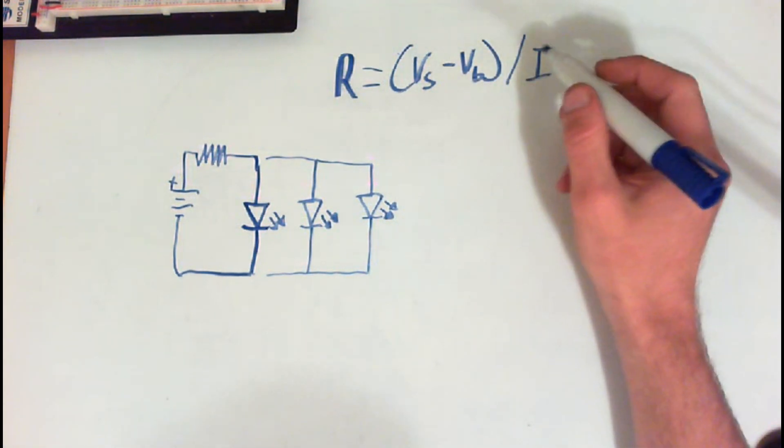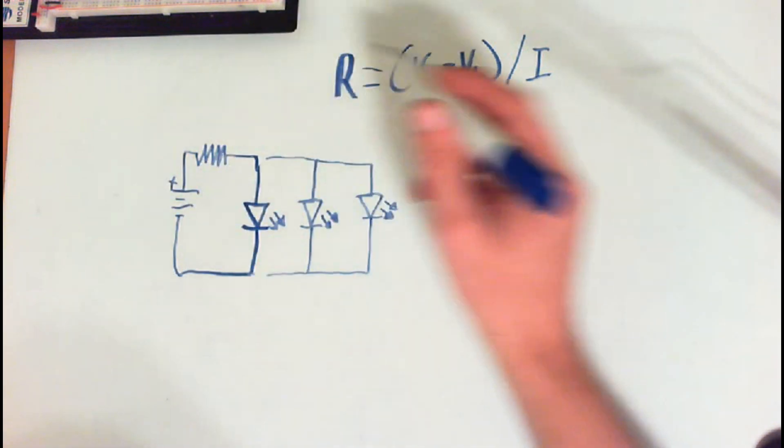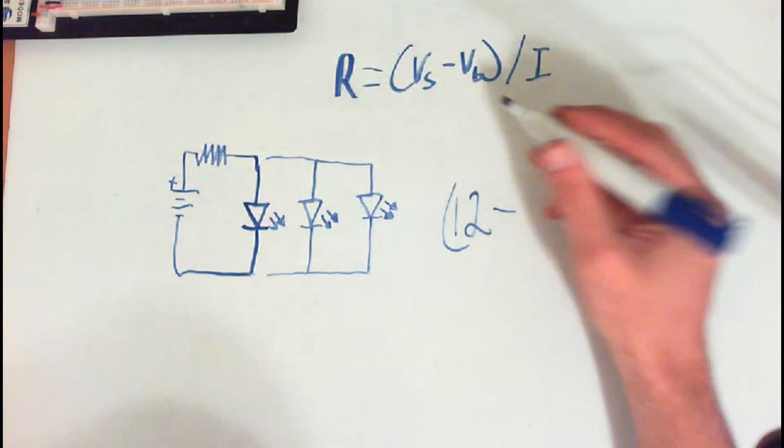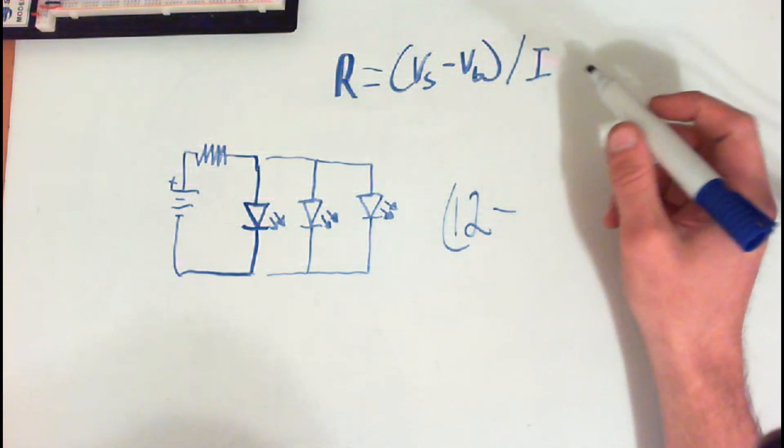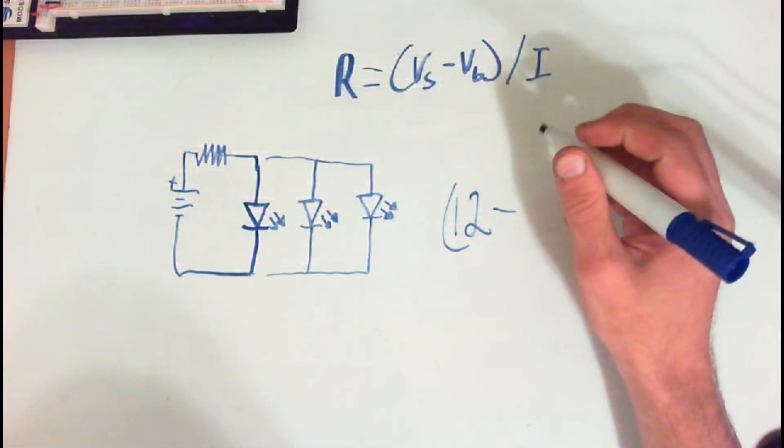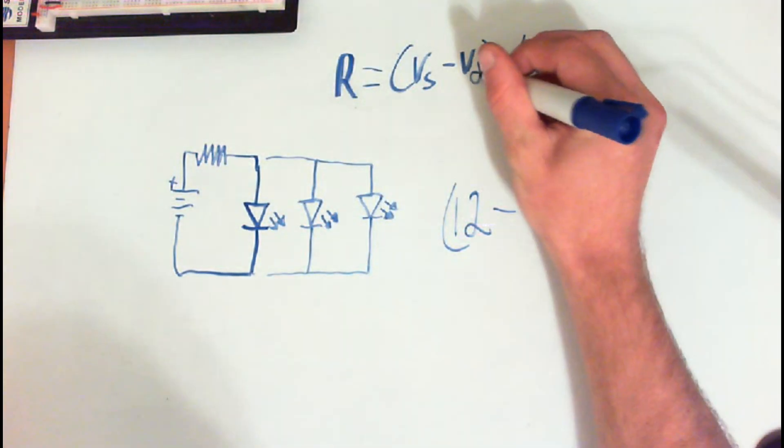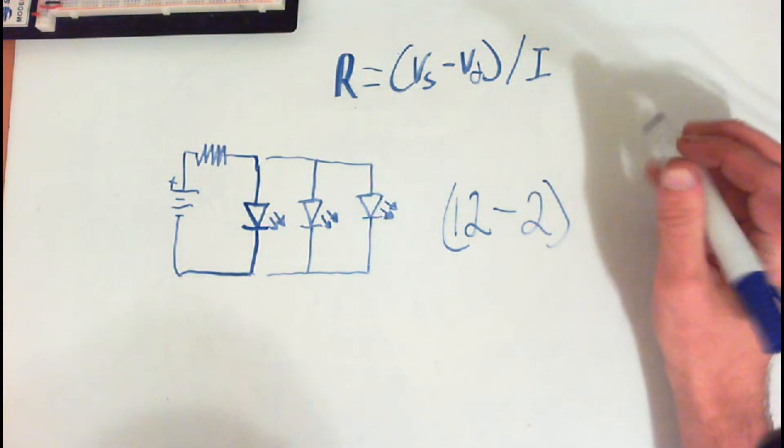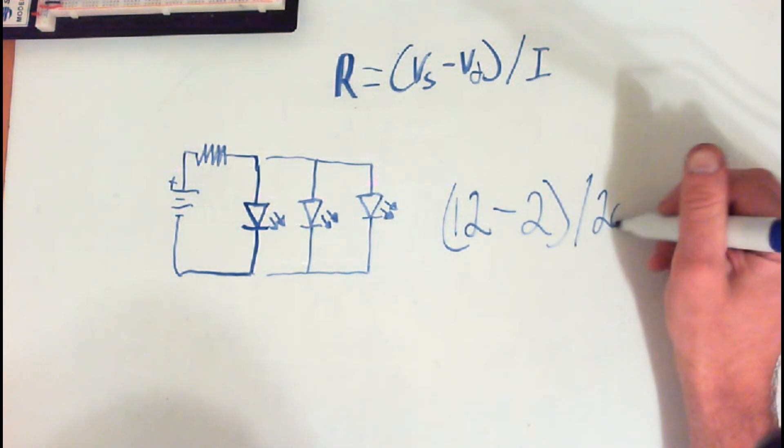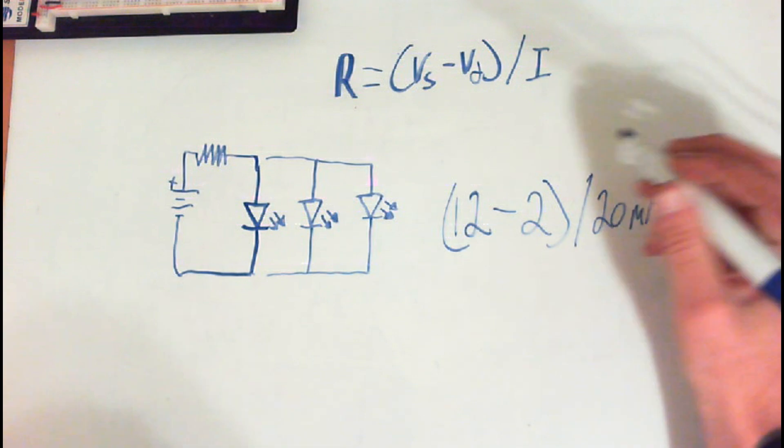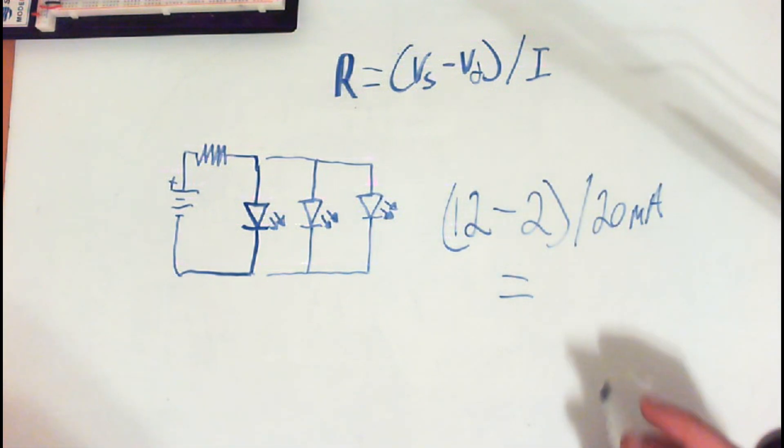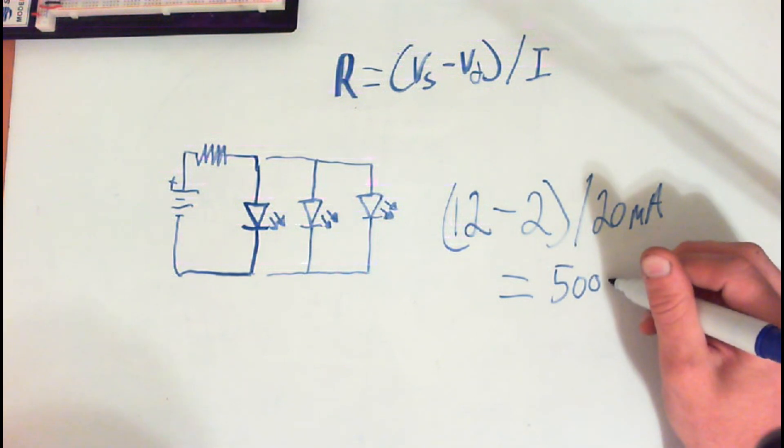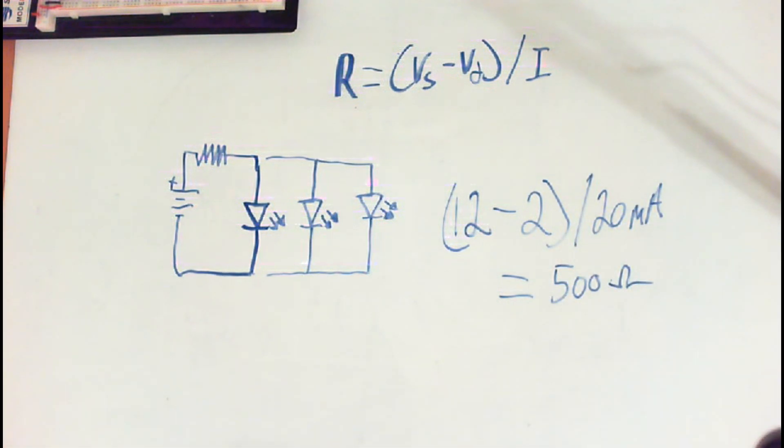So with our standard formula, we have a 12 volt battery. So we have a 12 volt source and a 2 volt drop. I don't know why that's a D, but that should be a D. So we have a 2 volt drop. And then we're going to divide by our 20 milliamps, which would come out to be about 500 ohms. Okay, that's fine.